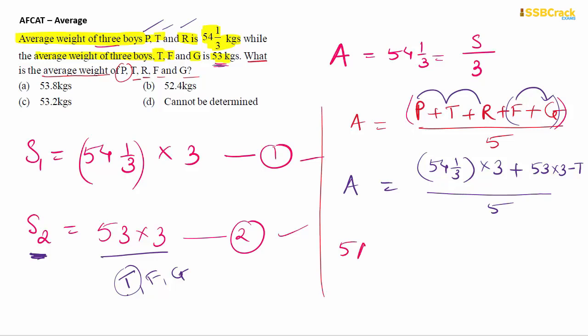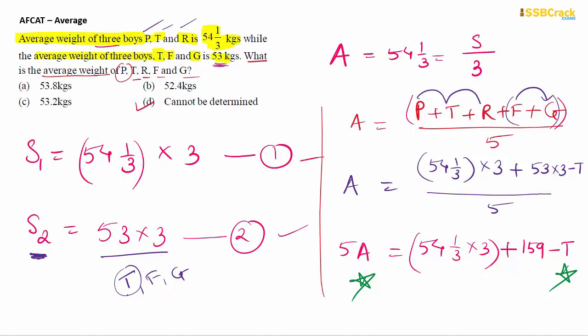The equation has two unknowns and only one condition, so it cannot be solved. The full sum (P + T + R + F + G) cannot be determined, and therefore the average of these five cannot be calculated. The answer is Option D: Cannot be determined.